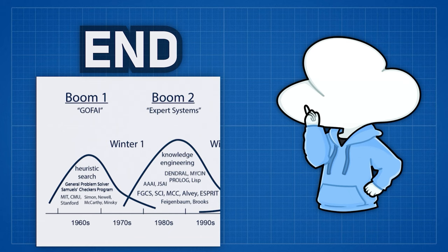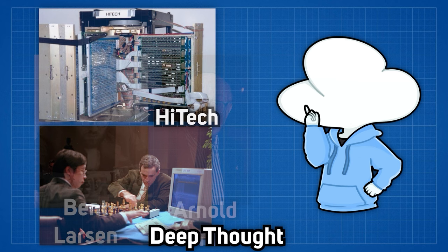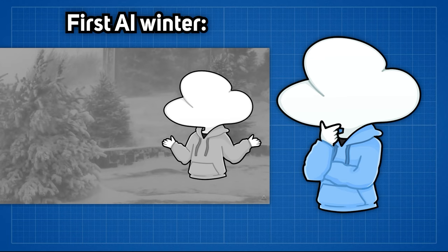But hey, the chess AI High Tech and Deep Thought defeated chess masters in 1989 for the first time in history. Compared to the second AI winter, that's pretty neat right? While this second AI winter definitely did not look like the first AI winter where no progress was made for 10 years, this time capitalism came to the rescue.